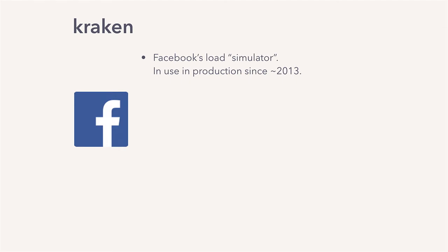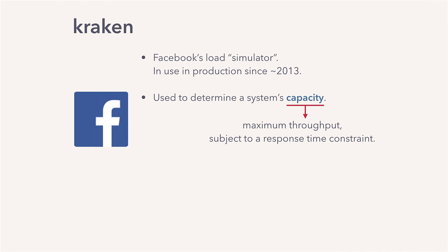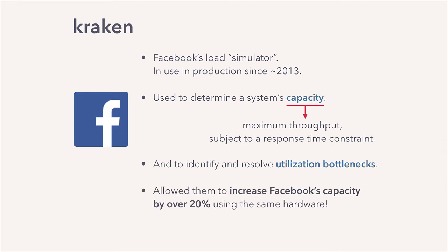Kraken is Facebook's load simulator. It was built in about 2013, and they use it primarily to determine a system's capacity — where capacity is the maximum throughput, requests per second, a system can support given a particular response time constraint — and to identify and resolve utilization bottlenecks. You have a target capacity; if your system fails to meet that target, why does it fail? They claim that Kraken has helped them increase Facebook's capacity by over 20% using the same hardware. That's a remarkable engineering feat — and a hell of a lot of money saved.